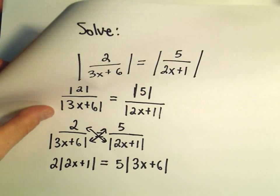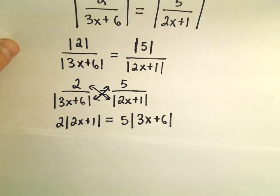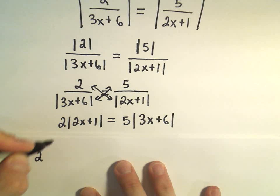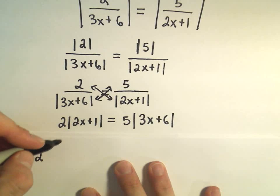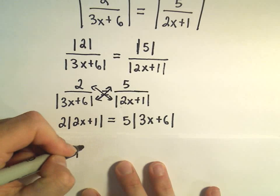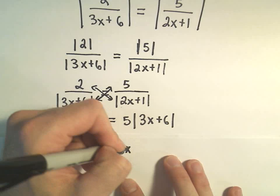And again, at this point what we do is basically create our two different equations that we have to solve. For one of the equations, everywhere there's absolute value for my two expressions, I just turn those into parentheses. So that's one equation we'll have to solve.